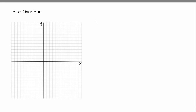In this video we're going to do the rise over the run. The rise over the run is a method for drawing a straight line on graph paper, and usually you need two pieces of information: a slope and a point. So rise over the run is used to draw lines.